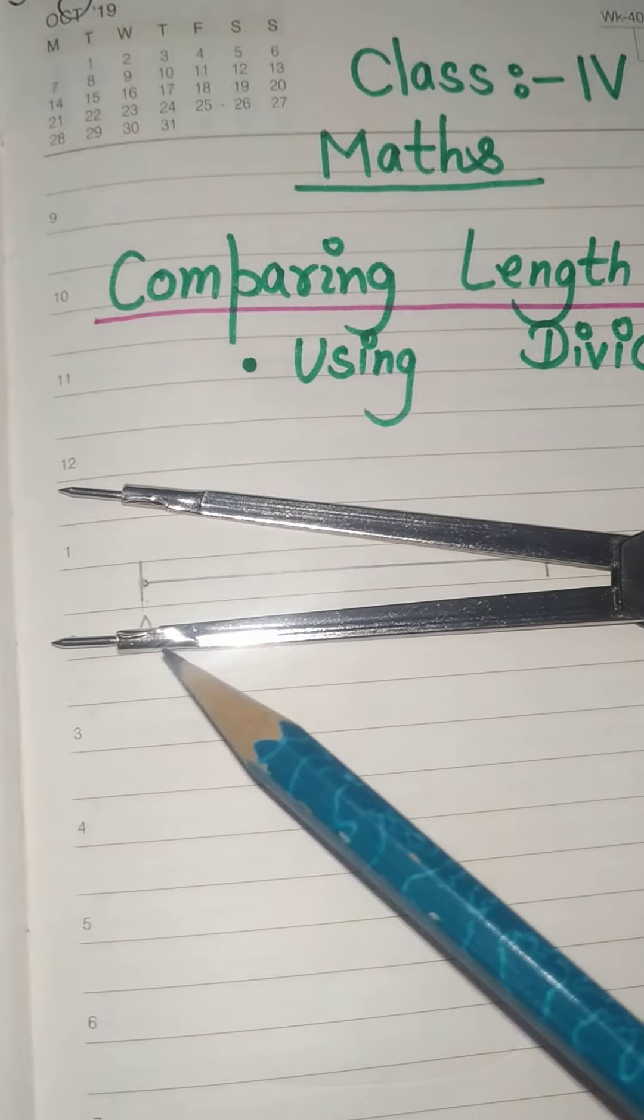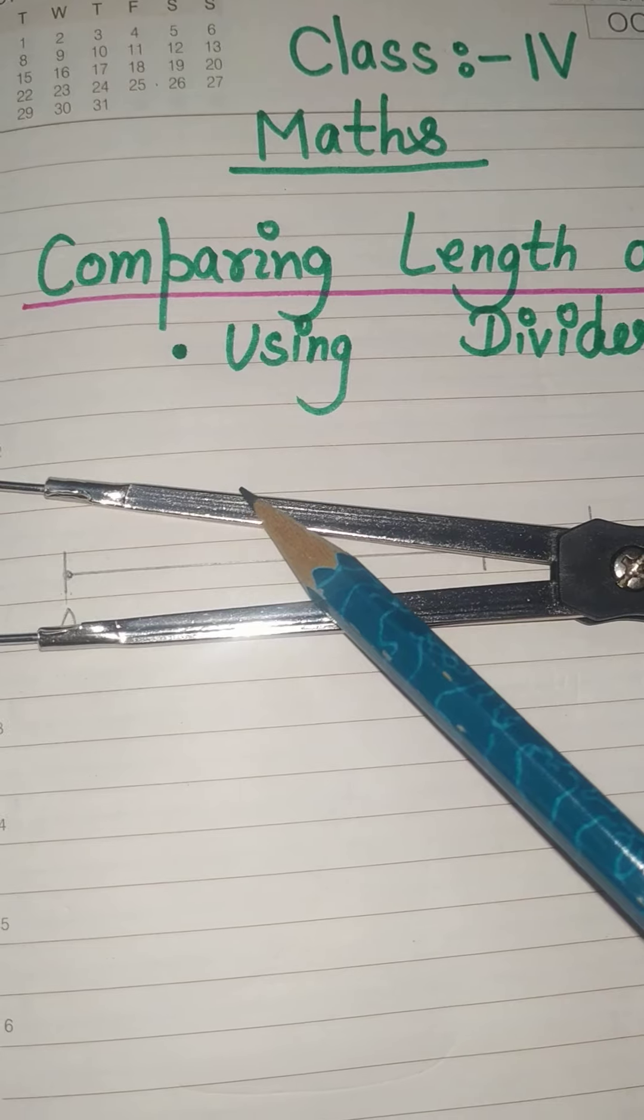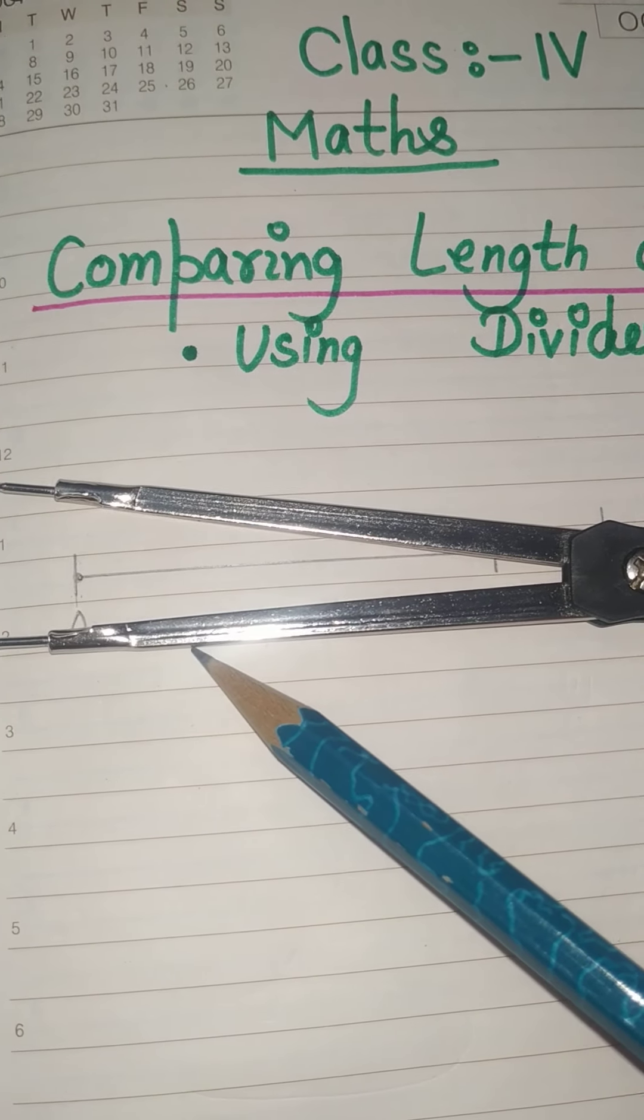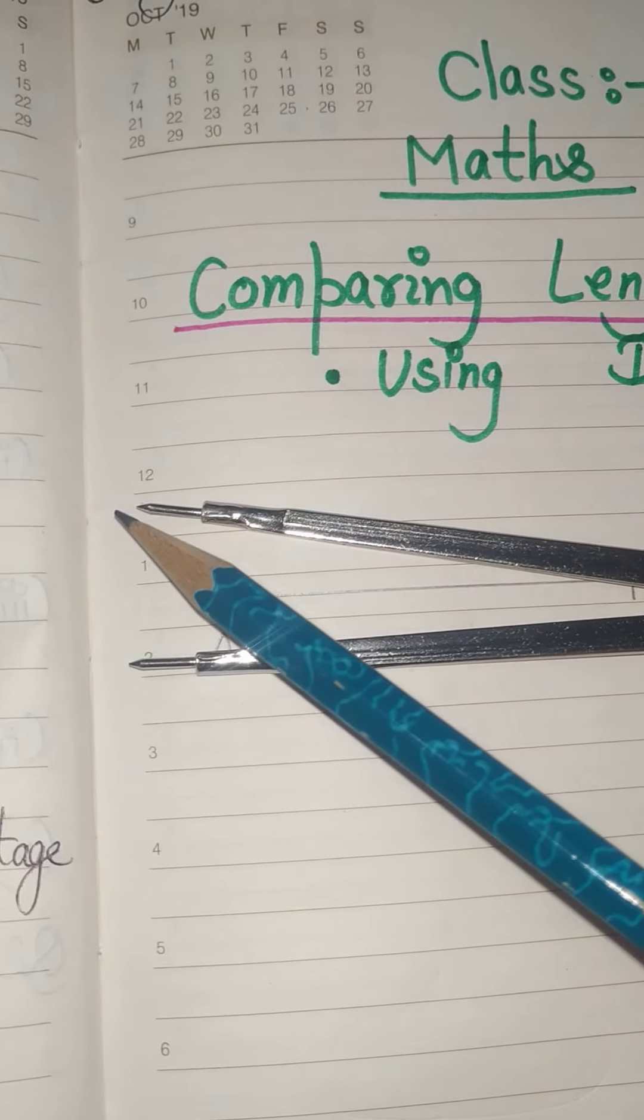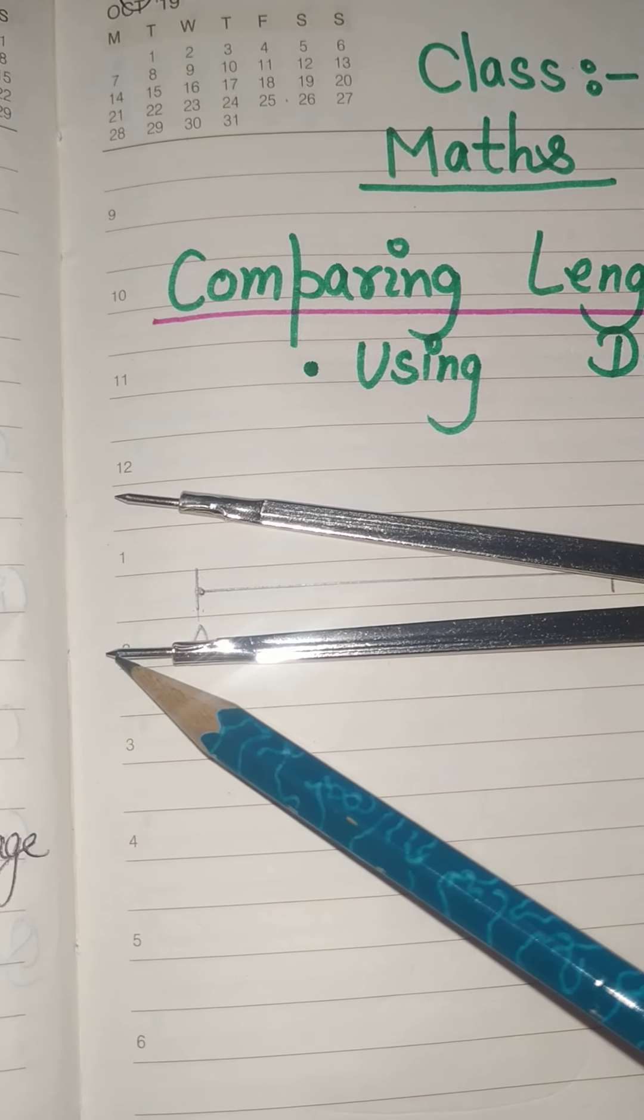And these two are the arms of this divider, and these are the pointed ends of the divider.